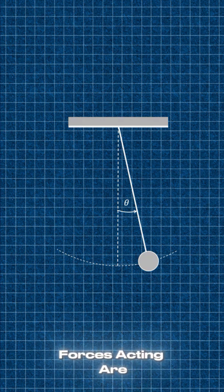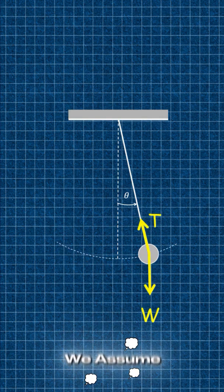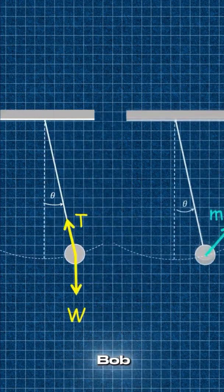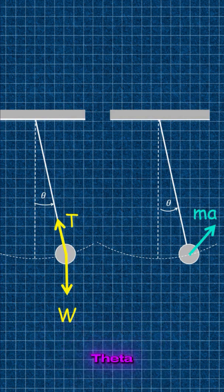The forces acting are gravity downward and tension along the string. We assume the acceleration of the bob acting in the direction of increasing theta.